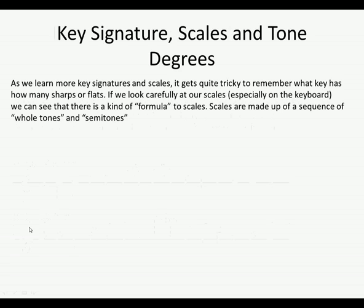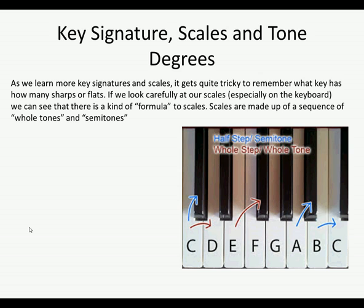We're going to look at the formula for scales, because with more key signatures and scales to learn it gets trickier to remember what key has how many flats or sharps. There is a formula we can use to work them out — it's far easier if you don't need it, but it's good to understand. We'll be working the formula using whole tones and semitones. In each whole tone there are two semitones, which is why they're sometimes called whole steps and half steps.